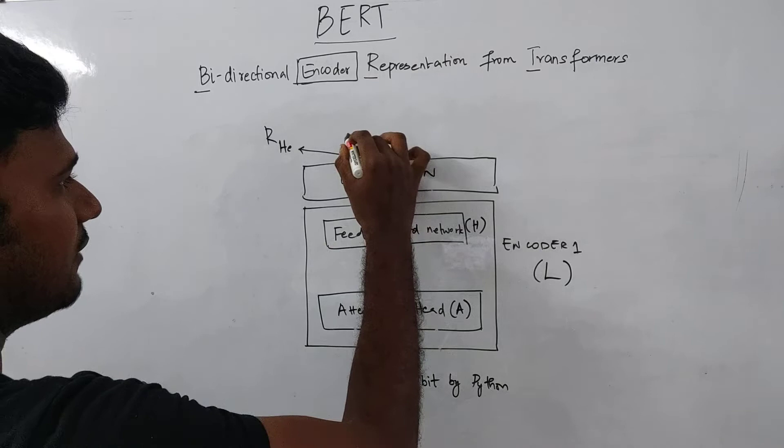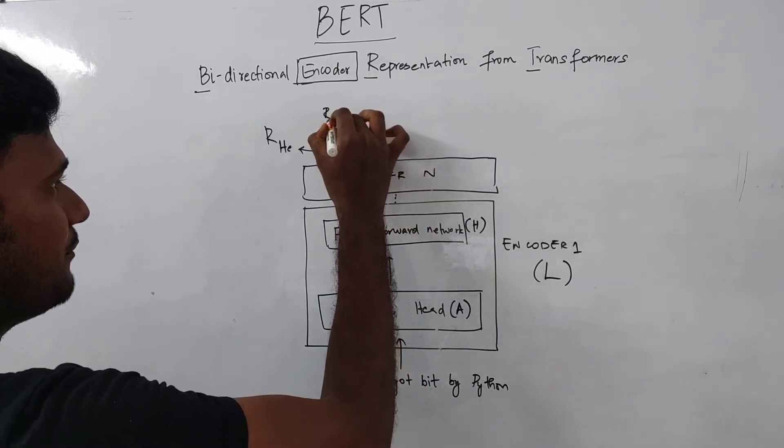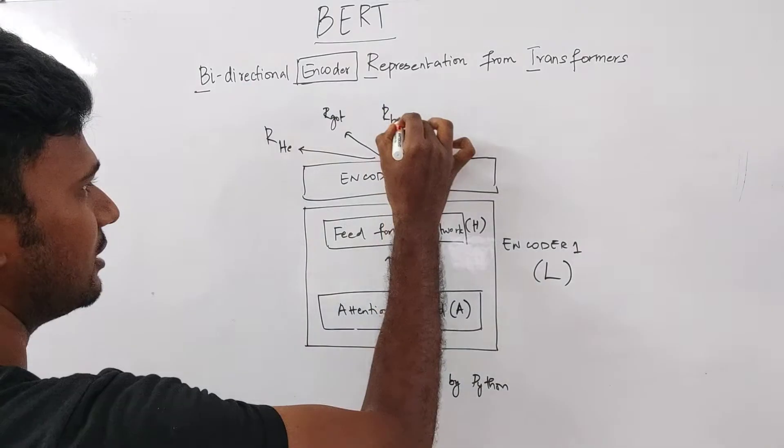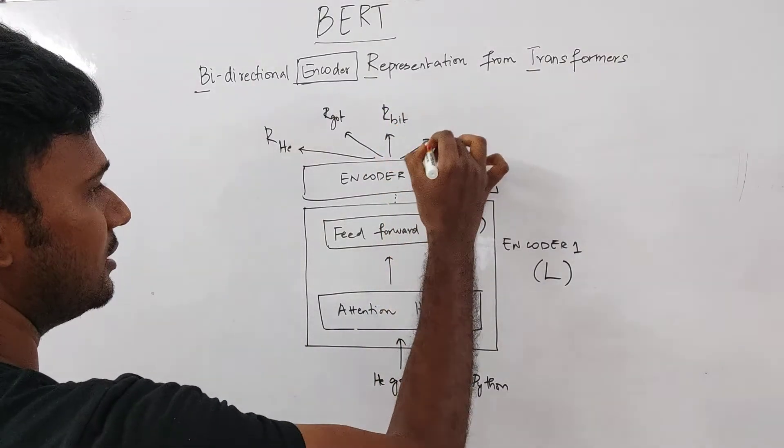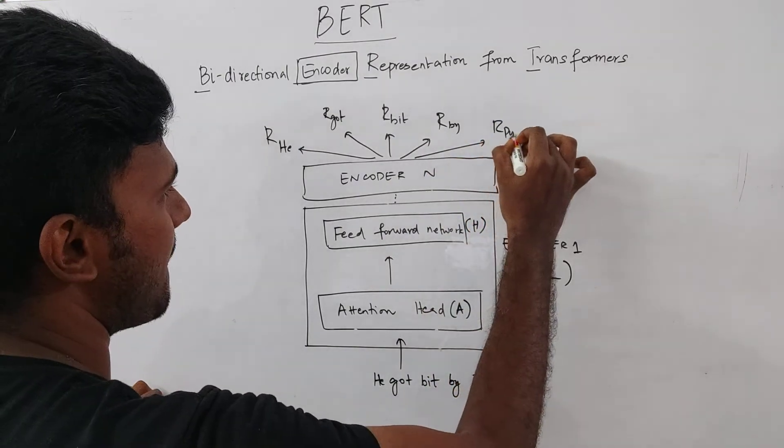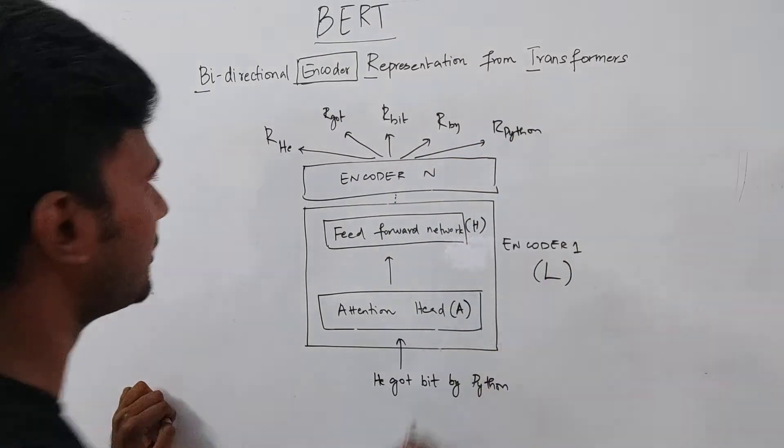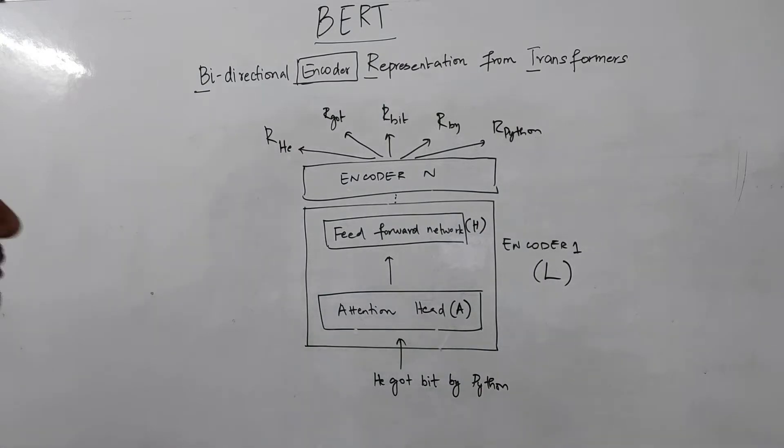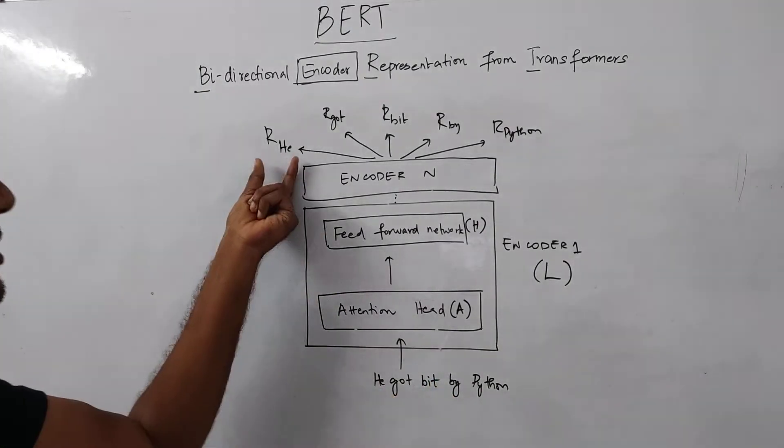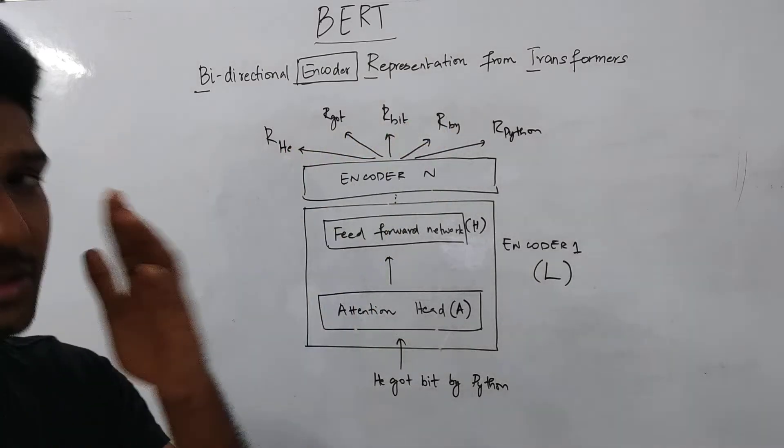And after that, we'll have a representation for got. And then we have the representation for bit. And then we get the representation for by. And finally, we get the representation for with. So here, from the input sentence, we got representation of every single word in the sentence.